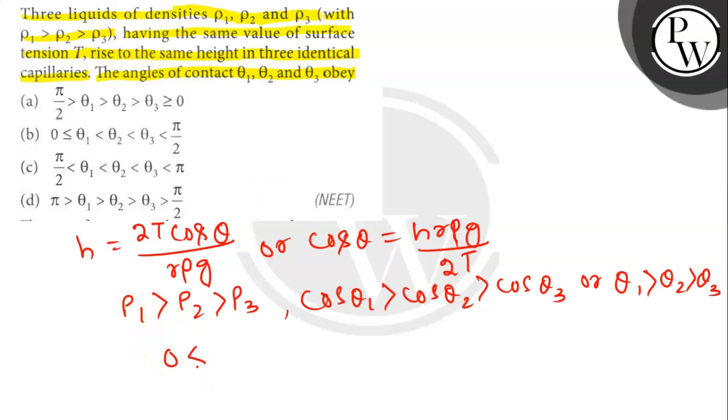So 0 is less than or equal to θ1 less than θ2 less than θ3 less than π by 2. So here option number B will be the correct answer.